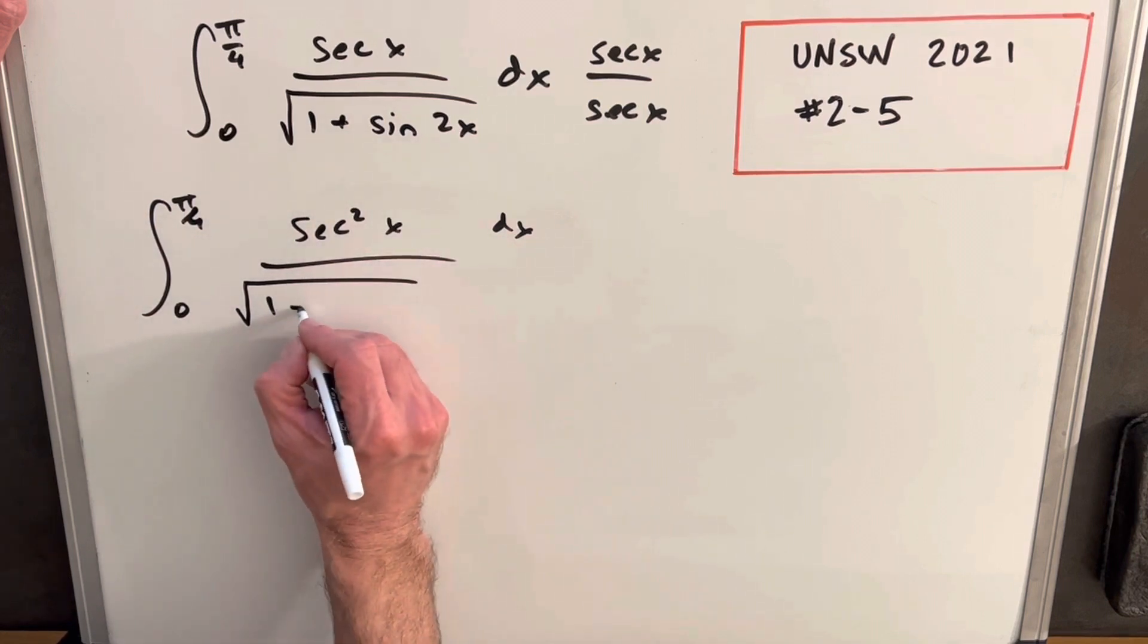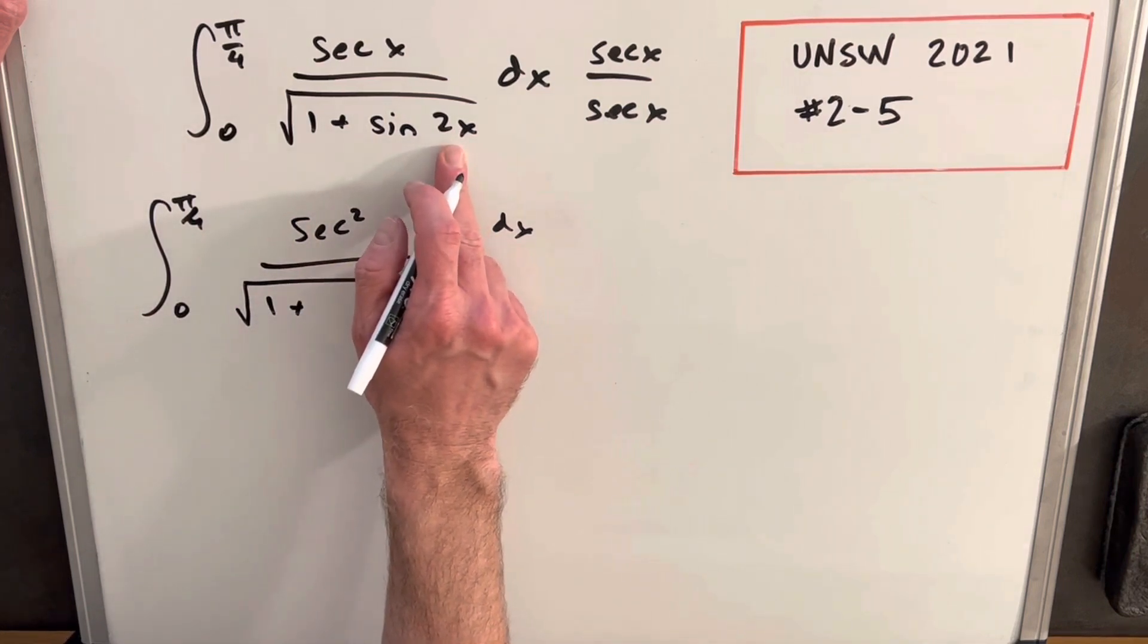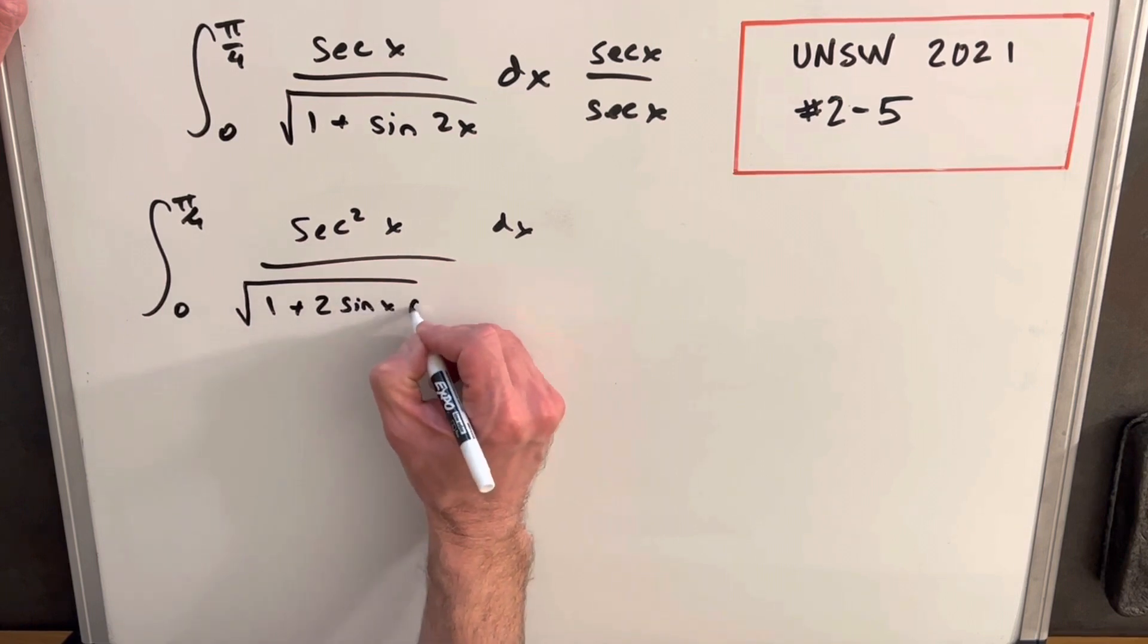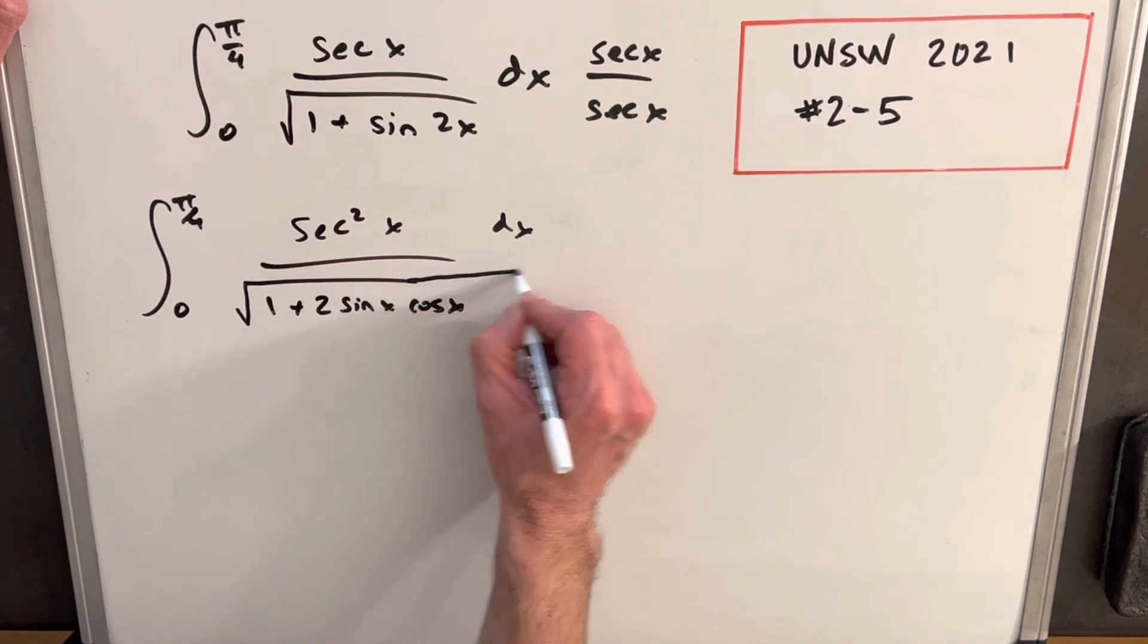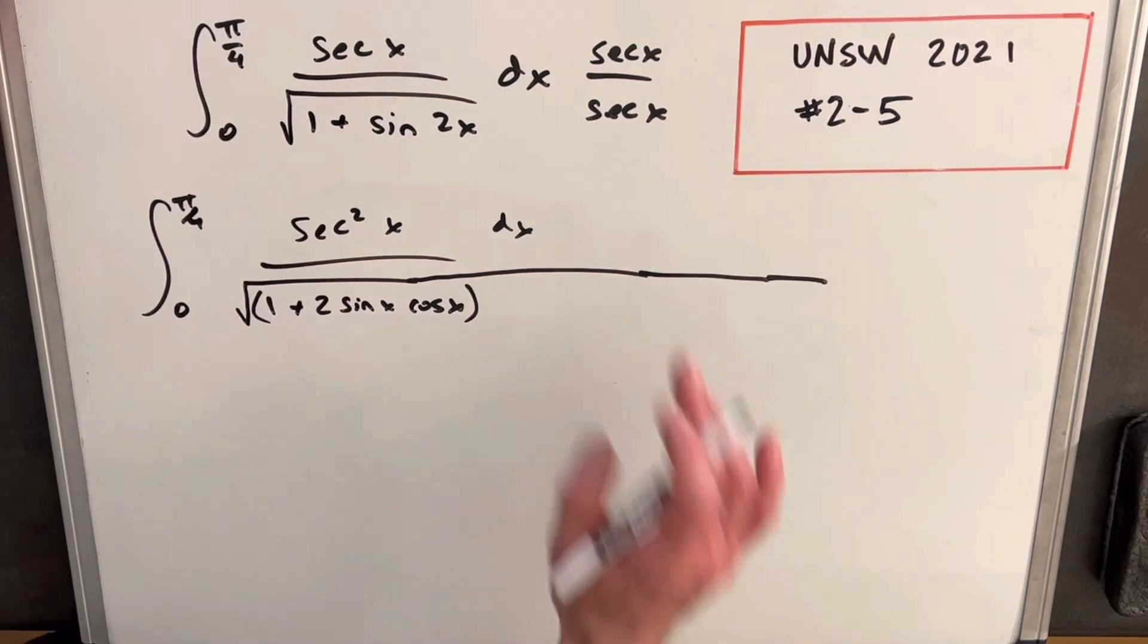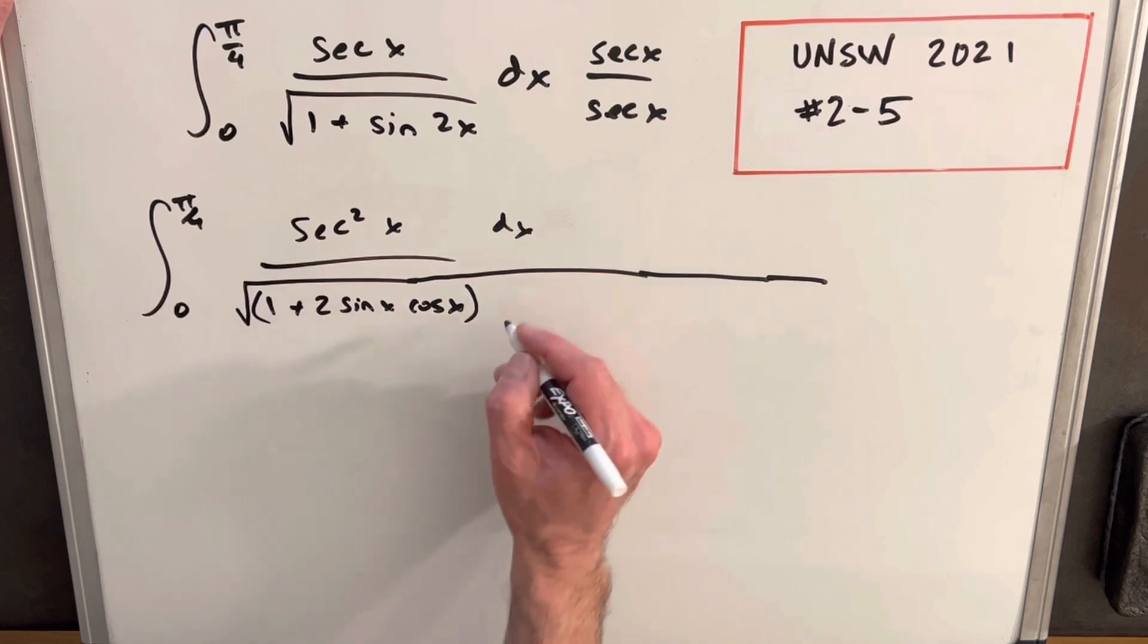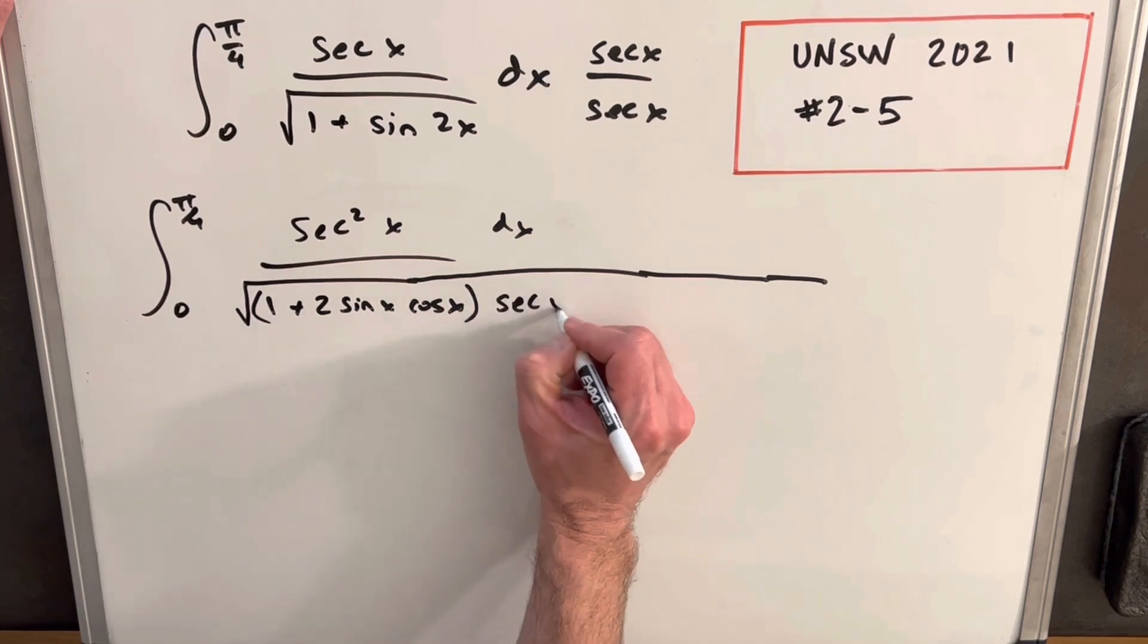For the sine two x, I'm going to use the identity that sine two x, the double angle formula for sine, which tells us this can be written as sine x cos x. I'm just going to make my square root longer. And when I multiply the secant x into the denominator, I'm going to bring it inside the square root. So I need to write this as secant x squared.